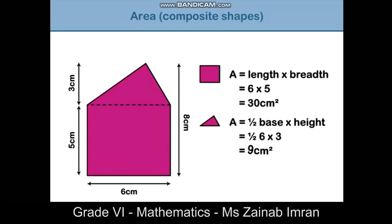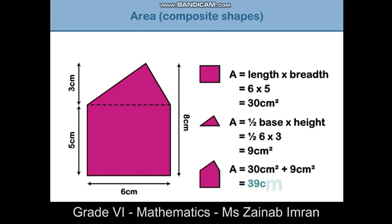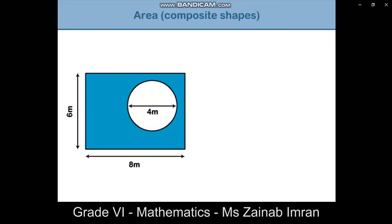In this example, the blue shaded area is a rectangle and the white circle is a hole that has been cut out of the middle. To find the area of the shape, we begin by finding the area of the rectangle. The formula for calculating the area of the rectangle is: area equals length times breadth.